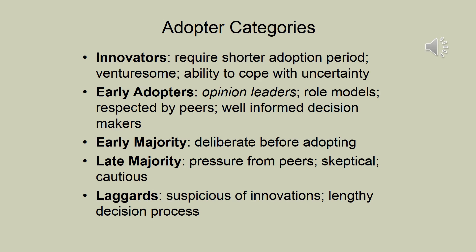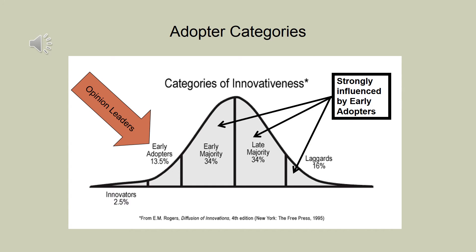The early majority deliberate before adopting, and the late majority waits a bit longer — they need more pressure from their peers and are skeptical and cautious. Then you have the laggards, who are suspicious of innovations and take a lengthy decision process. These adopter categories have been found to fall within a bell curve, with early adopters and innovators on one side, the majority under the bell curve in the early and late majority, and laggards at the end. The early and late majority and laggards are very strongly influenced by those early adopters.